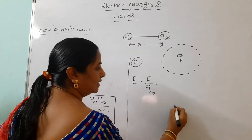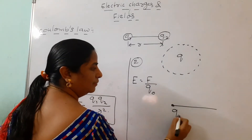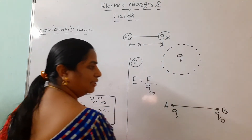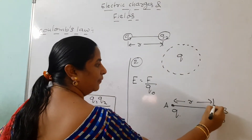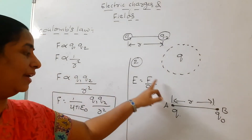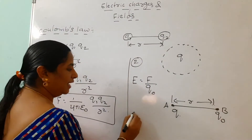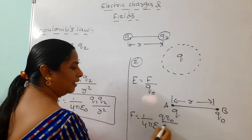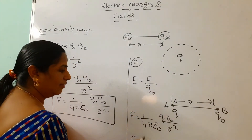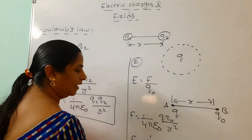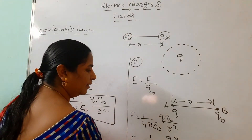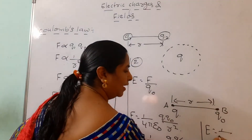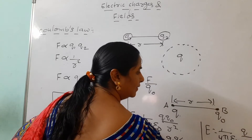To find the intensity due to a point charge Q at a point A, we place a test charge Q₀ at distance R from Q. From Coulomb's law, the force is F = (1/4πε₀) × QQ₀/R². Since intensity E = F/Q₀, we get E = (1/4πε₀) × QQ₀/R² divided by Q₀. After simplification, the expression for intensity due to a point charge is E = (1/4πε₀) × Q/R².